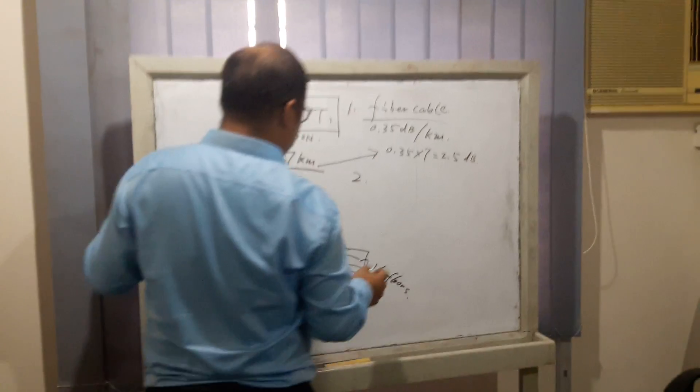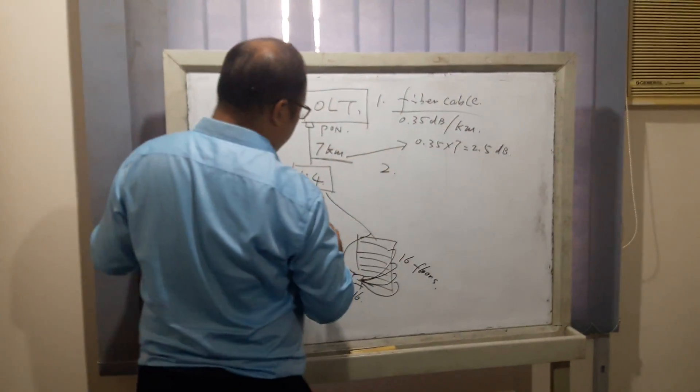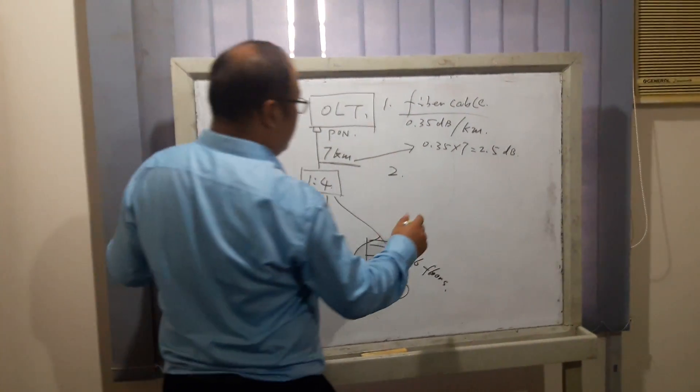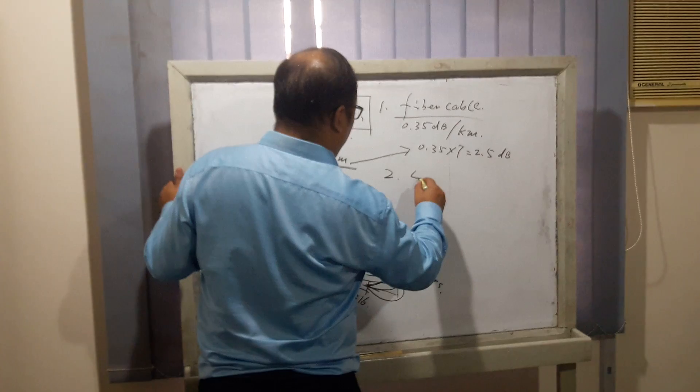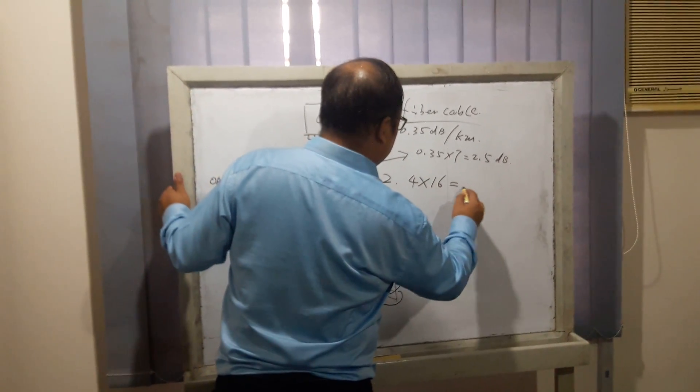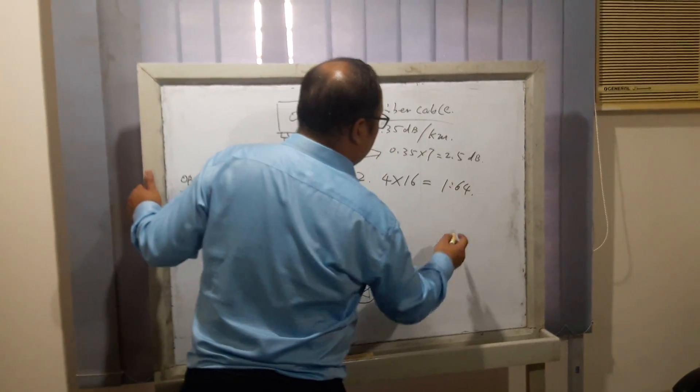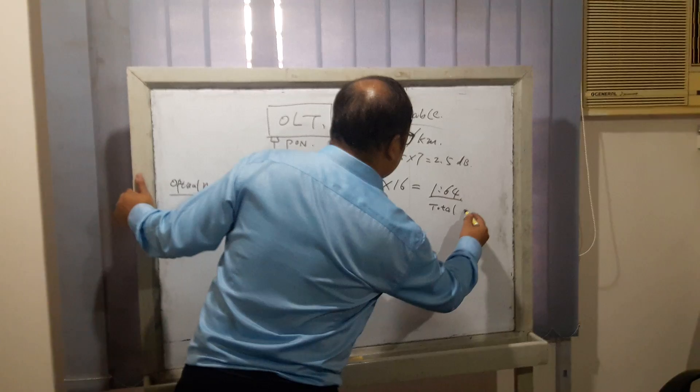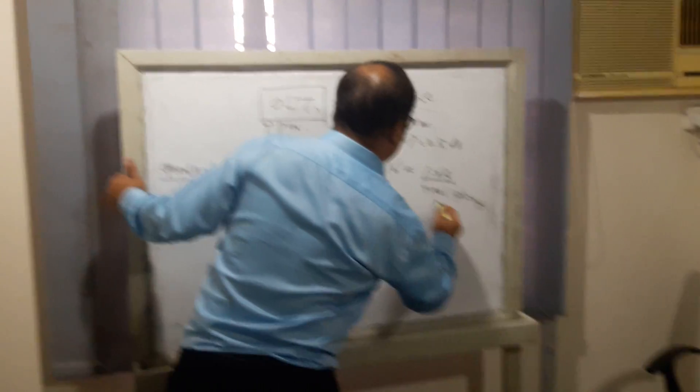Second is the splitter attenuation. There are two stages of splitters: 1:4 and 1:16. So the total splitting ratio is 4 into 16, which equals 1:64. That's the total splitting ratio.